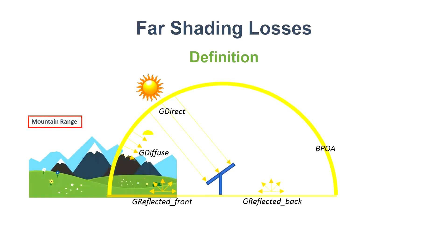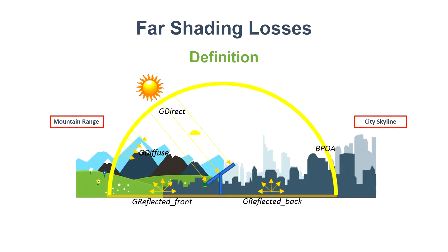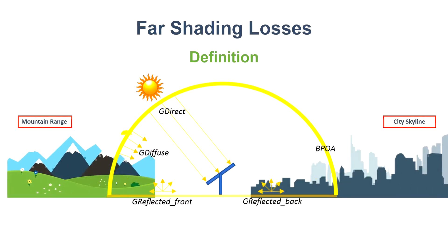During the hours when the sun is below the horizon line, the entire array loses its direct irradiance and at the time the energy is generated only based on the diffuse solar irradiance.